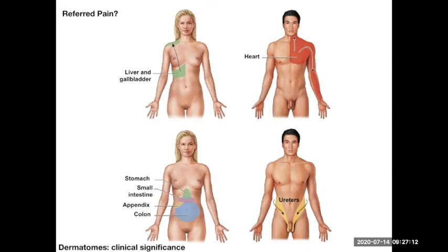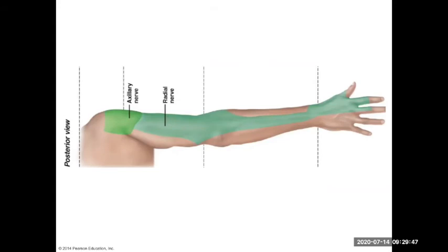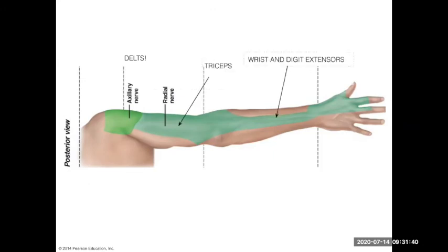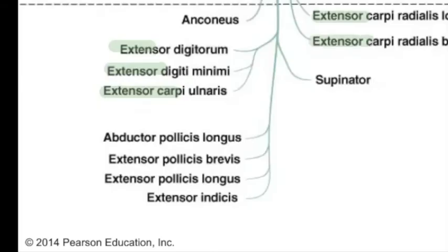The dermatome patterns of the limbs are much more complex than on the trunk. We see a patch of skin innervated by the axillary nerve and the radial nerve more distally. Nerves carry both sensory and motor information to and from a common destination, so if you know the patch of skin the axillary nerve innervates and remember what muscle is under there, you can guess that the axillary nerve innervates the deltoid muscle. The radial nerve dermatome is on the back of the arm and forearm, suggesting it innervates the extensor muscles of the elbow and wrist.